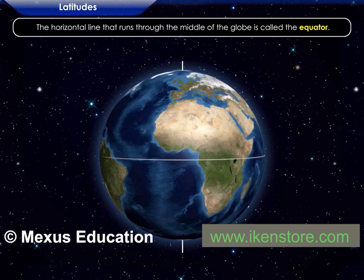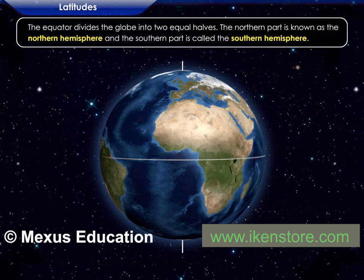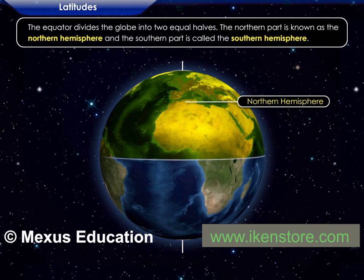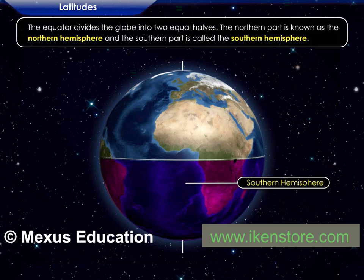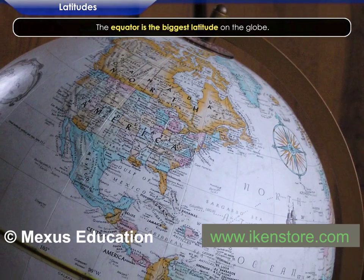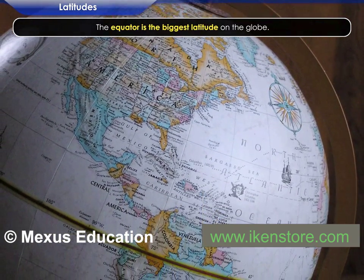The horizontal line that runs through the middle of the globe is called the equator. The equator divides the globe into two equal halves. The northern part is known as the Northern Hemisphere and the southern part is called the Southern Hemisphere. The equator is the biggest latitude on the globe.